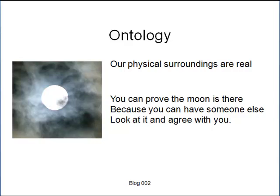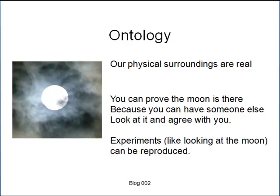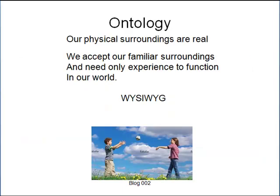Normally, if you doubt something is real, you simply ask a friend, 'do you see it too?' and seek confirmation. Yes, the moon is really there because when you do not look at it, someone else can, and they see it in a reproducible experiment. Our view of the world around us is: what you see is what you get.